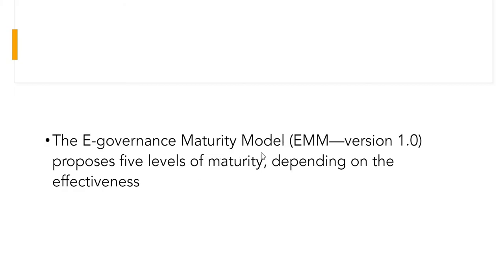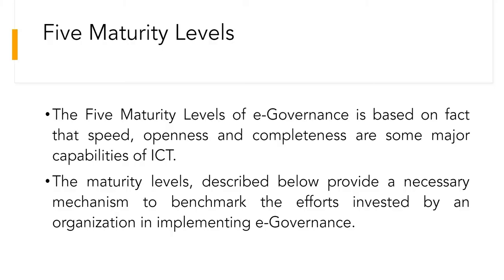The E-Governance maturity model, that is EMM version 1.0, has got five levels of maturity. The five maturity levels are based on the factors of speed, openness, and completeness, which are major capabilities of ICT. The maturity levels described provide a necessary mechanism to benchmark the effort invested by an organization in implementing E-Governance. These levels show which phase your model belongs to and what contributions have been made.